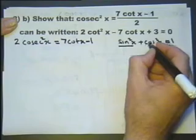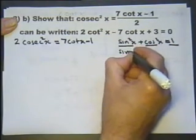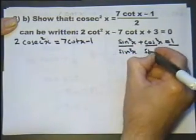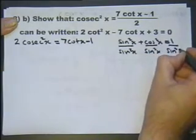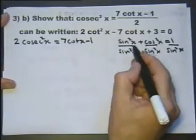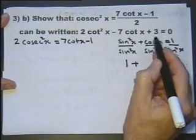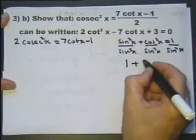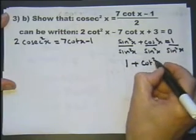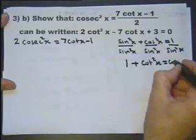If we divide each of these terms by sine squared, let's see what we get. This cancels giving me 1. This sine over cosine is tan, cosine over sine is cotangent, and the reciprocal of sine is cosecant.